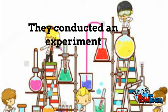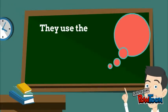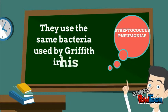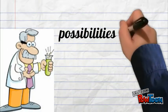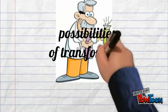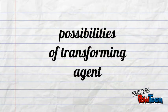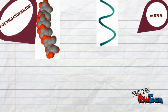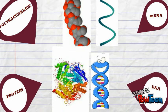They used the same bacteria used by Griffith in his experiment: Streptococcus pneumoniae. There were a few possibilities for the transforming agent. They might be mRNA, polysaccharide, protein, or DNA.